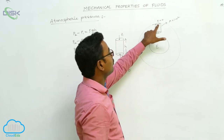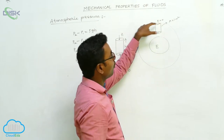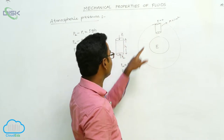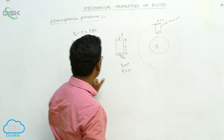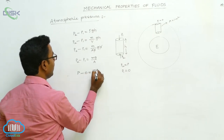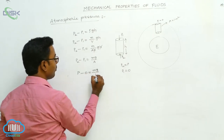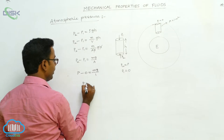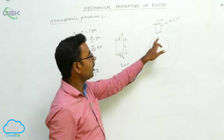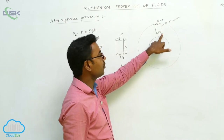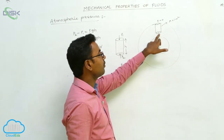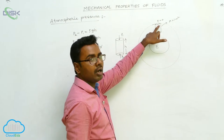At the end of the atmosphere, beyond this point, there is no atmosphere, so pressure P1 is equal to zero. By substituting here, P minus 0 equals MG by A, and since area equals 1, P equals MG. So we define that the pressure at a particular point is equal to the weight of the air column extending from this point to the end of the atmosphere.